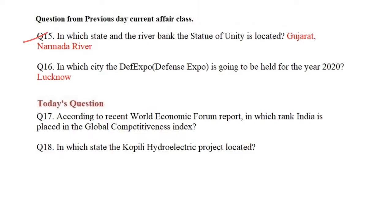In the last class, which state and which riverbank is the Statue of Unity located? The Statue of Unity is located at Sardar Vallabhbhai Patel memorial in Gujarat State, on the Narmada riverbank.